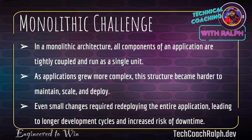In a monolithic architecture, everything is together — everything is in one big service. If you have a backend and a frontend component, you have to deploy the backend if you're going to be making a frontend change and vice versa, where you might not necessarily want to do that. Even small changes require redeploying the entire application, leading to longer development cycles and increased risk of downtime.